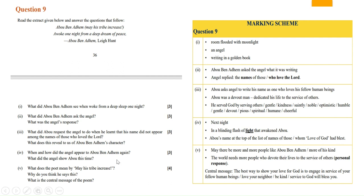When and how did the angel appear to Abu Ben Adhem again? What did the angel show Abu this time? Angel appeared to Abu Ben Adhem again the next night in a blinding flash of light that awakened Abu. This time the angel shows Abu that Abu's name was at the top of the list of names whom the love of God had blessed.